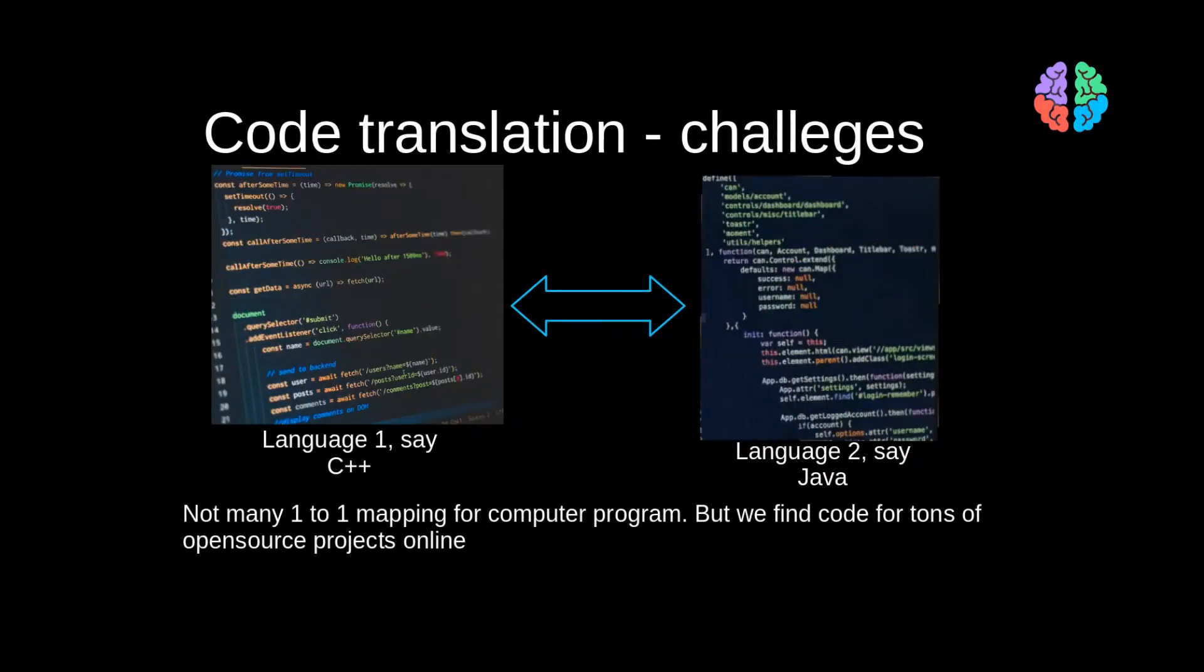When it comes to source code or programs, there is simply not that much parallel data available for any two given languages. And this has been a huge challenge in developing AI-based trans-compilers. But what we do have are plenty of open source projects. This work makes the most of these open source projects and shows that we can train in an unsupervised manner and achieve results that are better than rule-based trans-compilers.